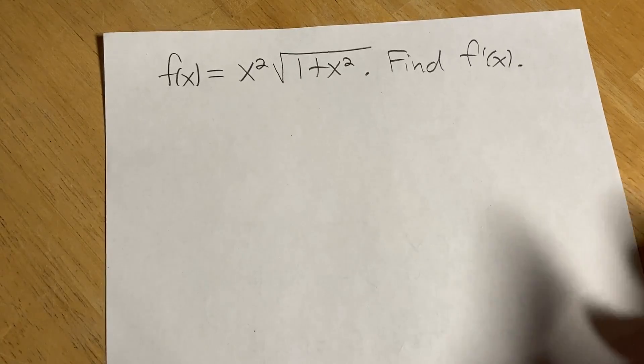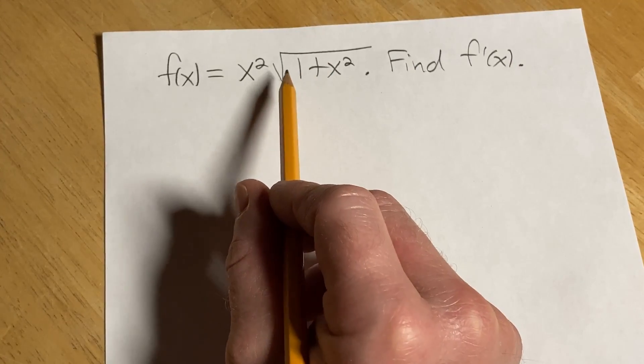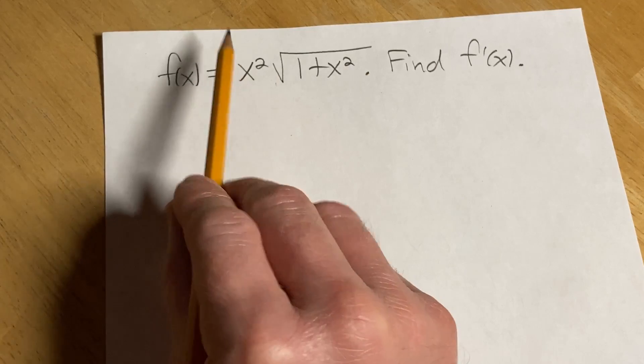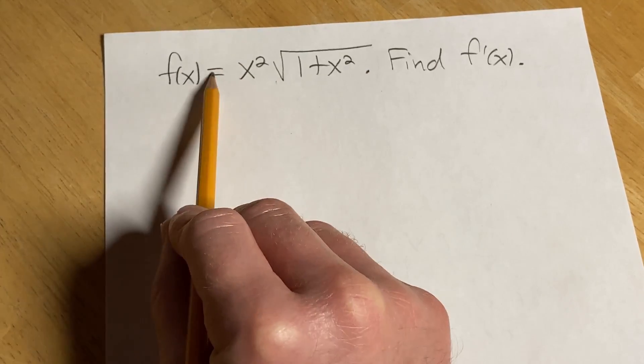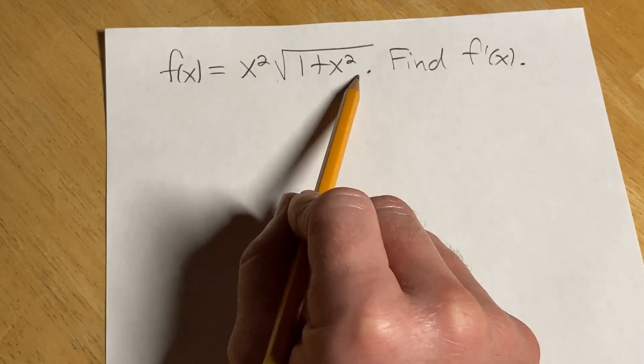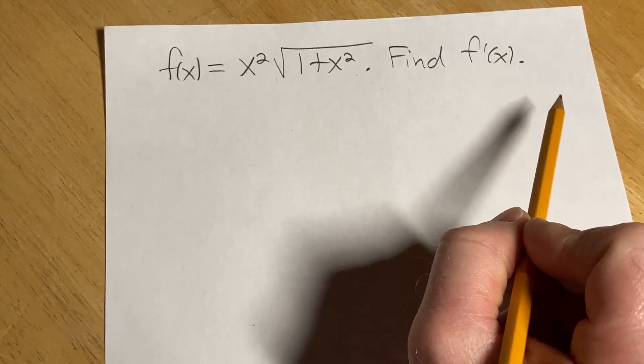Hi, in this video we're going to do a math problem where we find a derivative using the product rule and the chain rule. The function we have is f(x) equals x squared times the square root of 1 plus x squared. The question is to find the derivative.